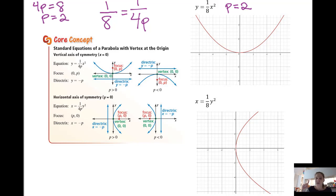p equals two means that the focus is zero comma two. This is the focus, zero comma two. And the directrix is y equals negative p, so y equals negative two.